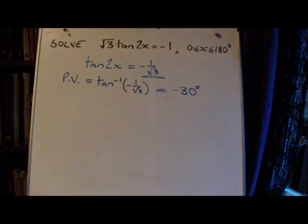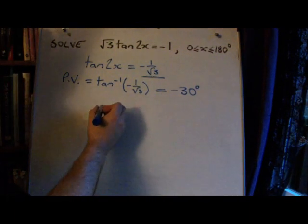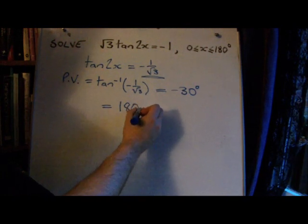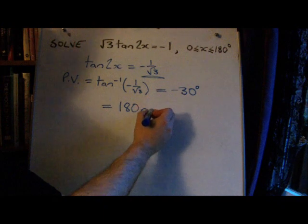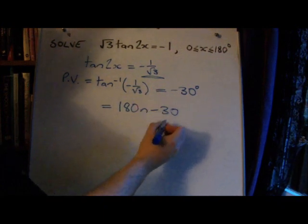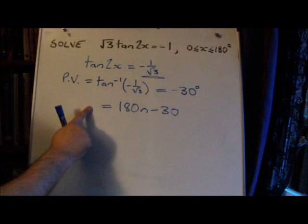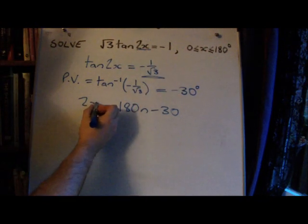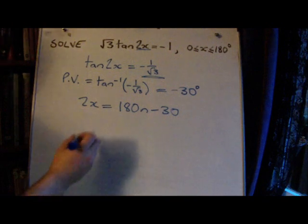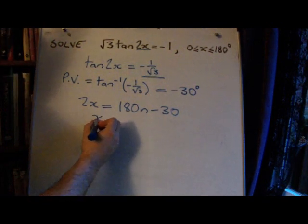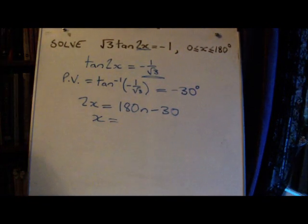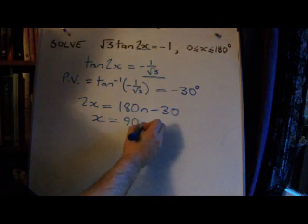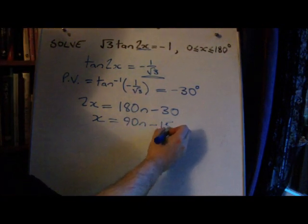Now the general solution part, the right hand side, we can write down the equation as before. So it's going to be 180n plus the principal value, so it's minus 30. On this side, we no longer have x. We've got 2x, so this part needs to appear here. Since we're seeking to find values of x, all we've got to do is divide through by 2. So this gives us a new formula for the general solution.